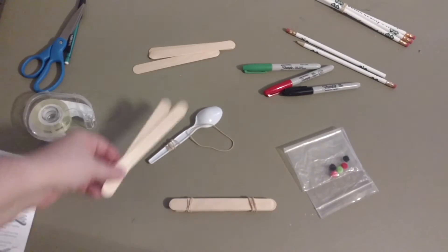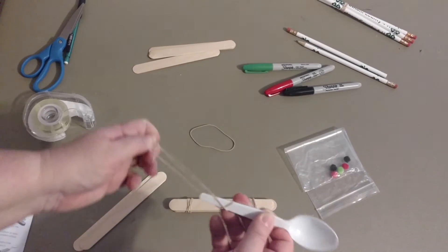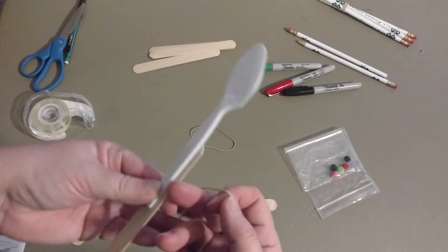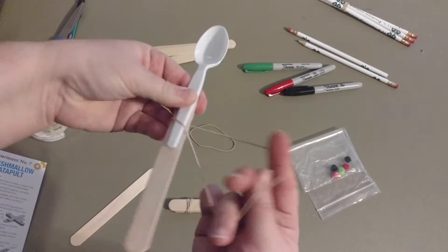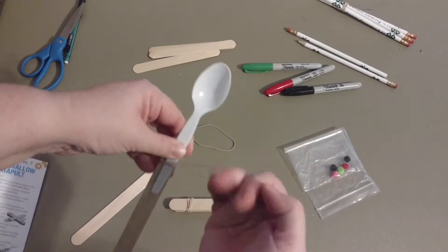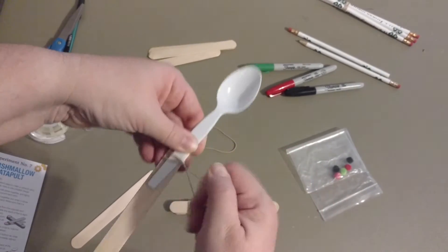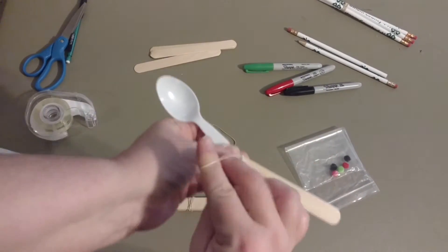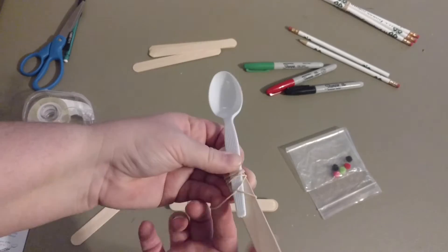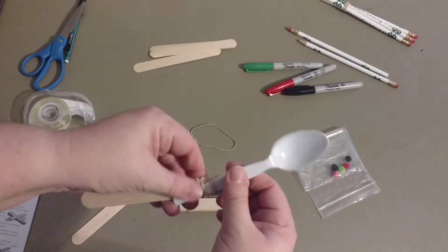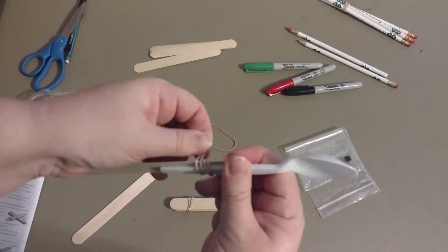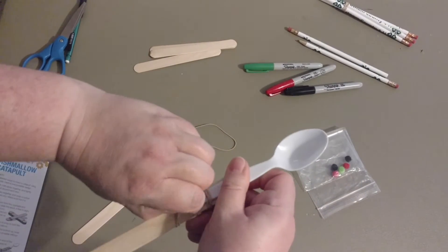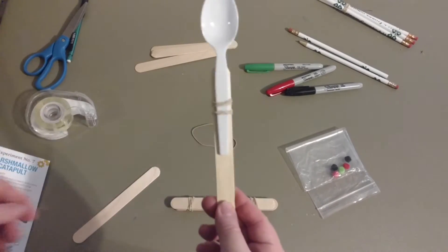Then we're going to take two of the other craft sticks, and one of these you're going to take your spoon and attach it to the stick. This is going to be kind of hard. We're going to really stretch your rubber band around there, but we want to make sure that we get the spoon on there real secure because we don't want it falling off in the middle of our launch. I think I could go one more time. We'll try it one more time. So my spoon is on there secure.